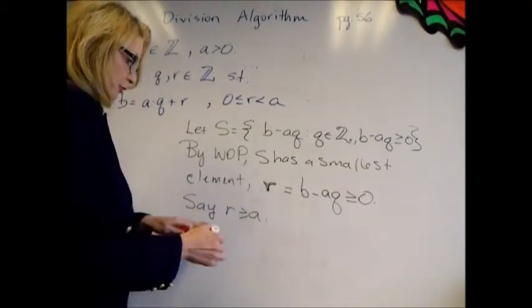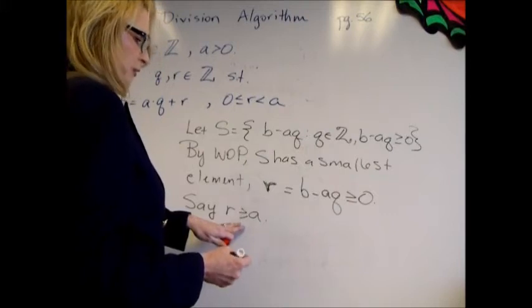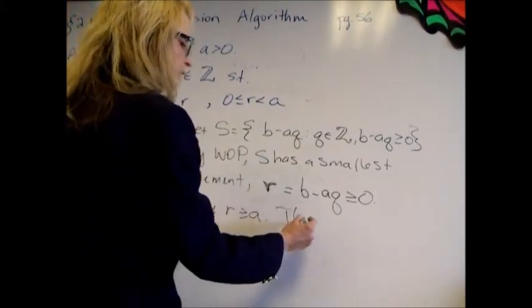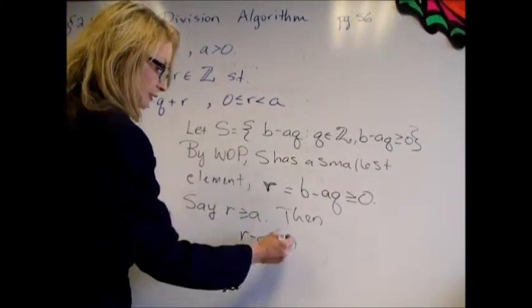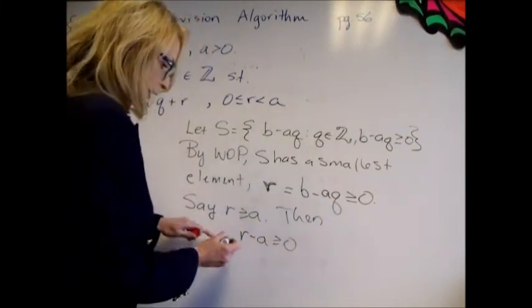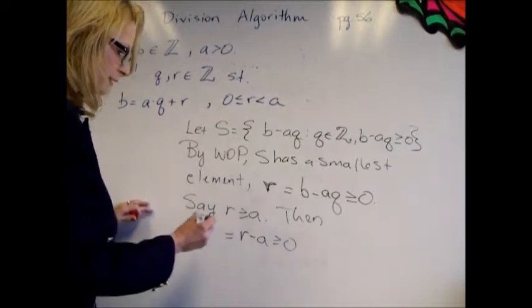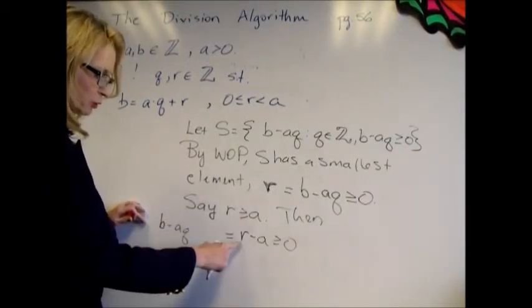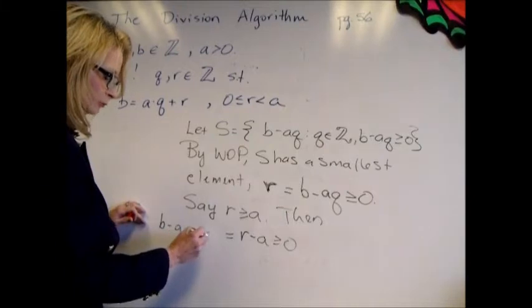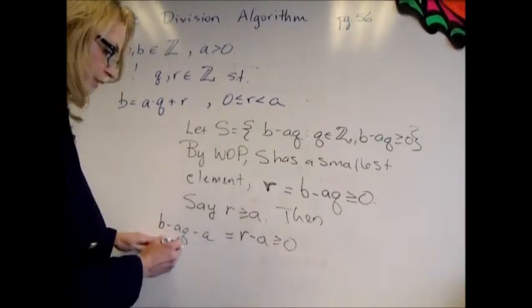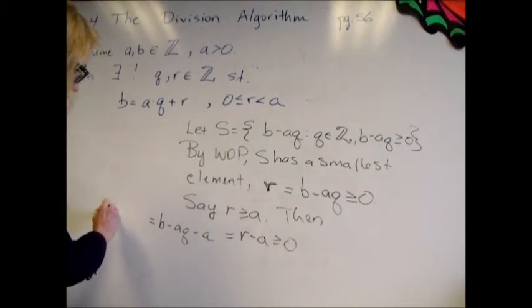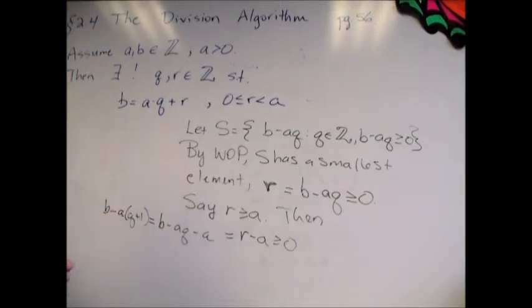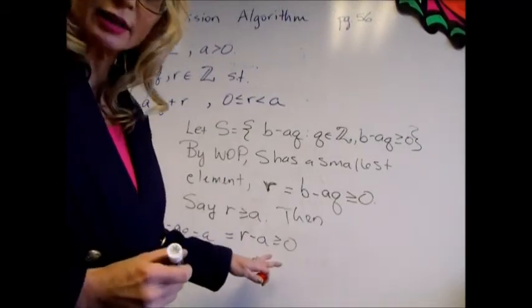Then what will happen? Well, r bigger than or equal to A tells us that r minus A is non-negative. Now note, this is the same as B minus AQ, which is what r is, minus A. And this is the same as B minus A times Q plus 1. So that's non-negative.